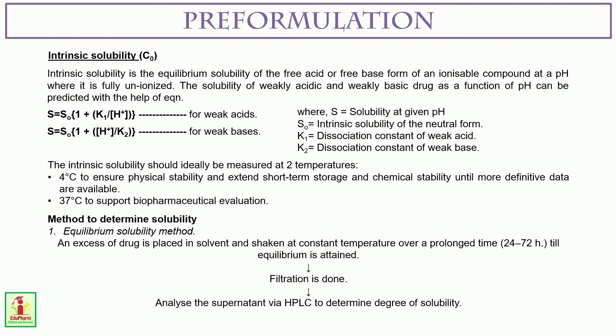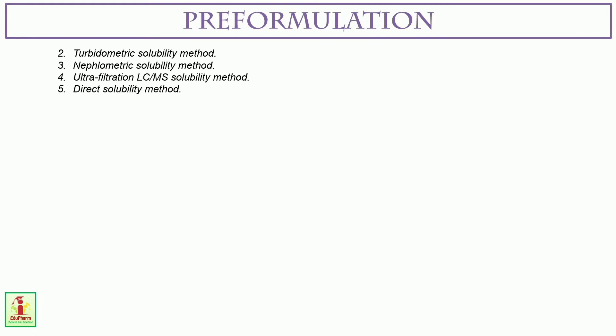The methods to determine solubility: Number one is the equilibrium solubility method, where an excess of drug is placed in a solvent and shaken at constant temperature over a prolonged period — for example, 24 to 72 hours — until equilibrium is attained. Filtration is then done and the supernatant is analyzed via HPLC to determine the degree of solubility. The second method is turbidimetric solubility method. The third is nephelometric solubility method. Then ultrafiltration or LC-MS solubility method, and finally the direct solubility method.